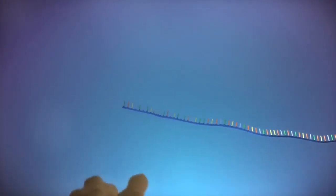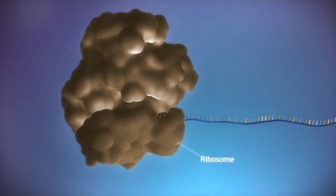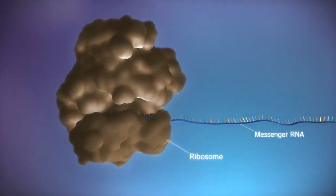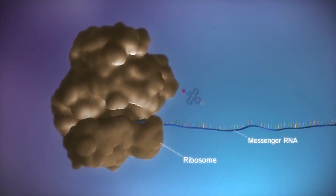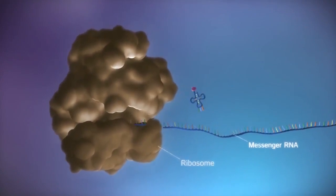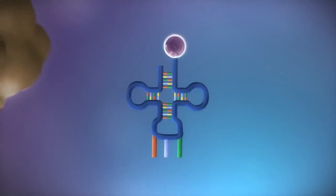Protein factories in the cytoplasm, called ribosomes, bind to the messenger RNA. The ribosome reads the code in the messenger RNA to produce a chain made up of amino acids.